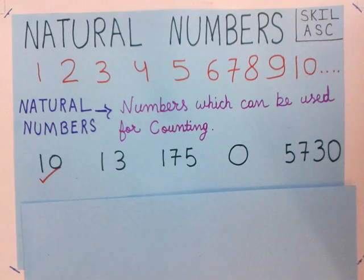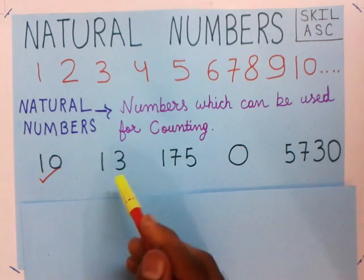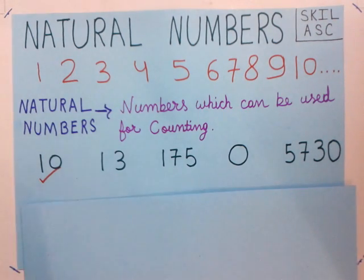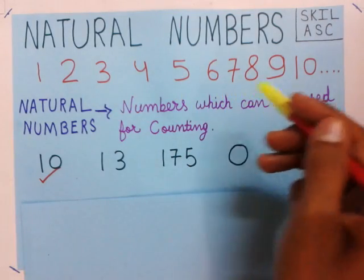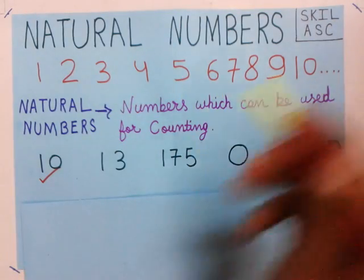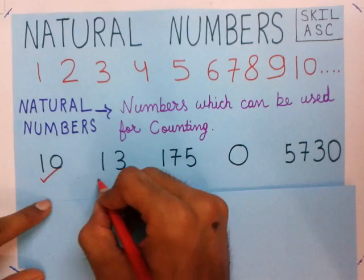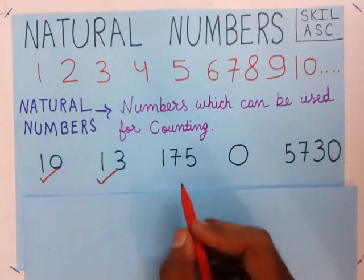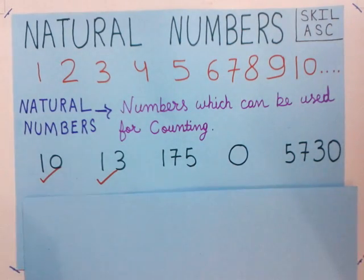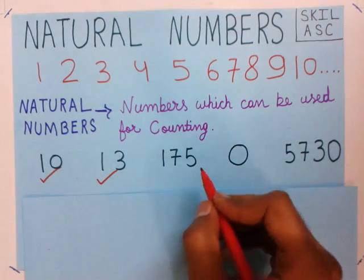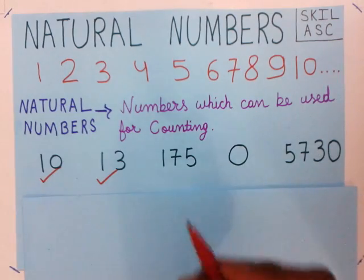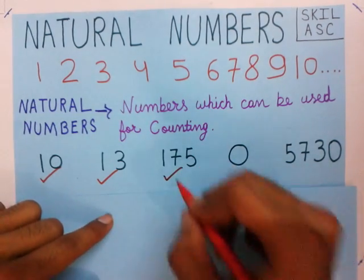Is 13 a natural number or not? We count as 1, 2, 3, 4, 5, 6, 7, 8, 9, 10, 11, 12, 13 — 13 is coming while counting, so 13 is a natural number. Is 175 a natural number? Of course it is a natural number, because 175 is used while counting.